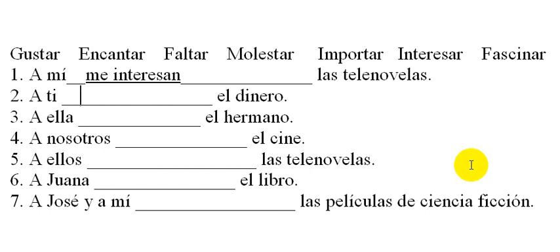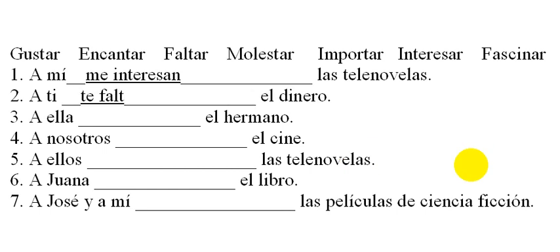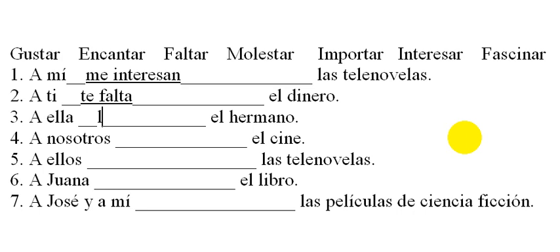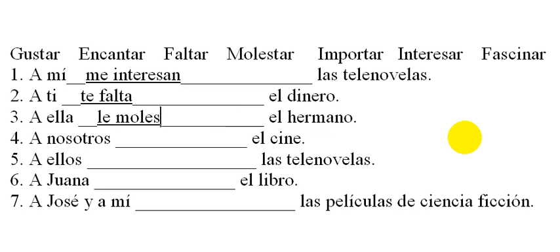Remember, this verb goes with what comes after it, and before the verb is the person we're talking about. So let's say that you're lacking the money. I'm going to say 'a ti, te fa—' so now you have to ask yourself, is it going to be 'faltas'? No, it's not going to be 'faltas.' It's going to go with 'the money,' which is third person singular: 'falta.' Maybe she's bothered by her brother or something like that, so it's going to be 'le molesta.'